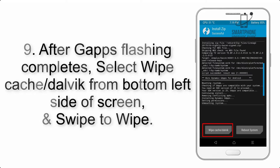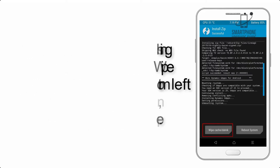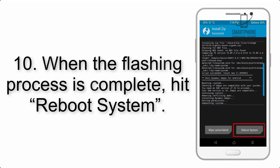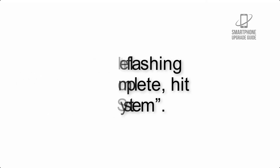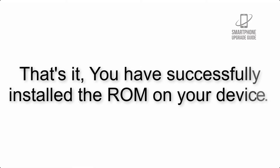Step 9: After GApps flashing completes, select Wipe Cache and Dalvik from the bottom left side of the screen and swipe to wipe. Step 10: When the flashing process is complete, hit Reboot System. That's it — you have successfully installed the ROM on your device.